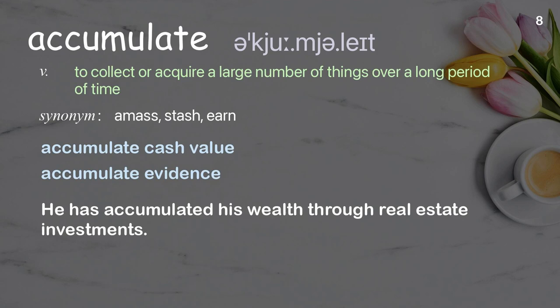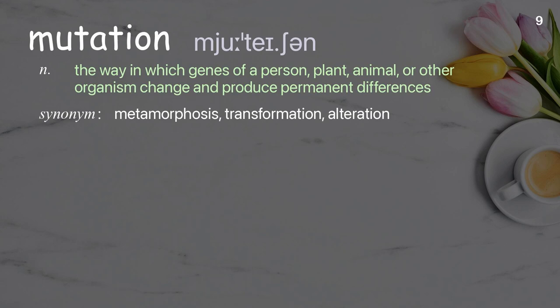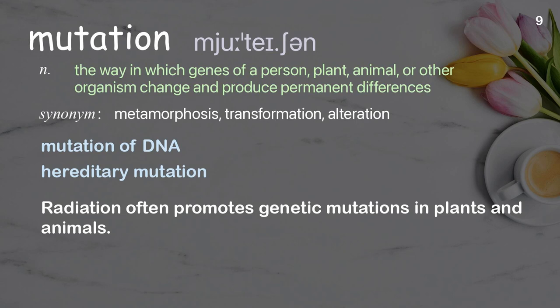Mutation: the way in which genes of a person, plant, animal, or other organism change and produce permanent differences. Examples: mutation of DNA, hereditary mutation. Radiation often promotes genetic mutations in plants and animals.